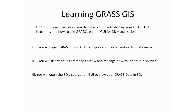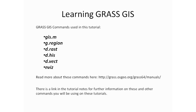You will open GRASS's own graphical user interface to display your raster data and vector maps. You will also use various commands to view and manage how your data is displayed, and finally you will open the 3D visualization graphical user interface to view your GRASS data in 3D. Before continuing, go to the notes and follow the links to learn more about the commands we're going to be using.